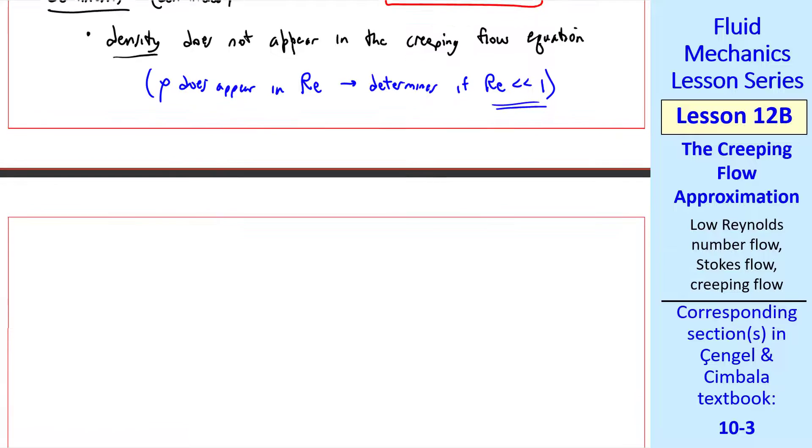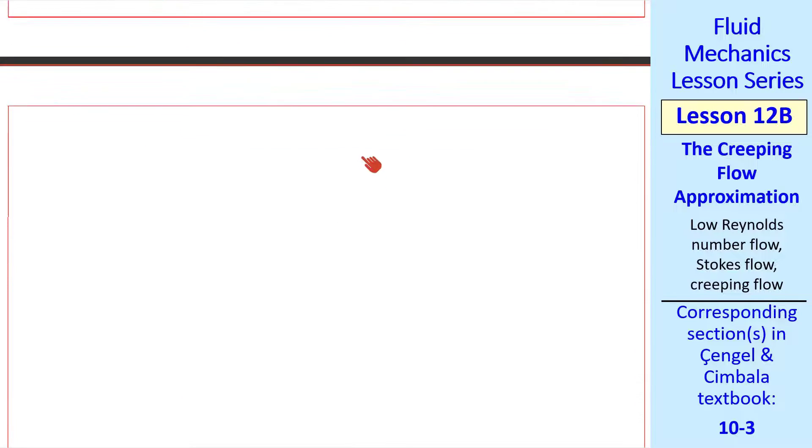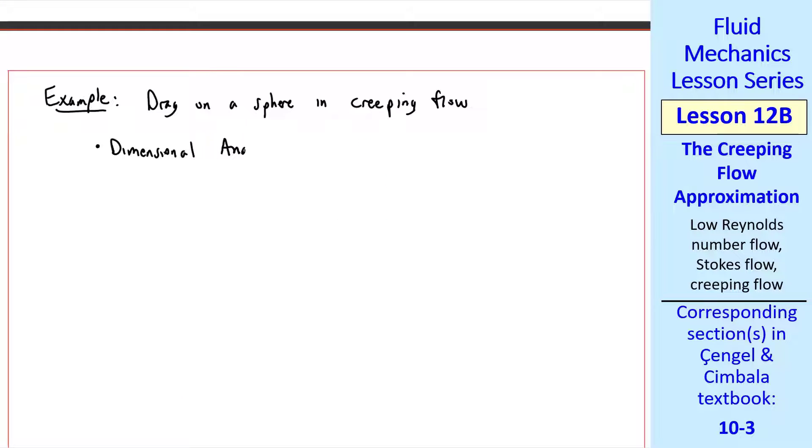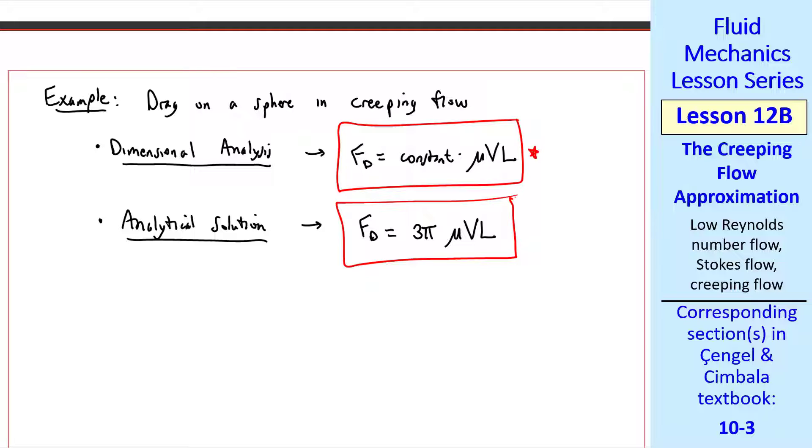As an example, let's consider aerodynamic drag on a sphere in creeping flow. We can perform a dimensional analysis, which is a good review of a previous lesson. We get FD as a constant times mu VL. Again, notice that there's no density in here. It turns out that you can solve the creeping flow equation over a sphere exactly and analytically. You get FD equal 3 pi mu VL. So our constant from dimensional analysis is actually 3 pi.